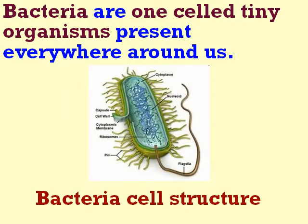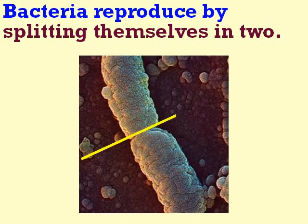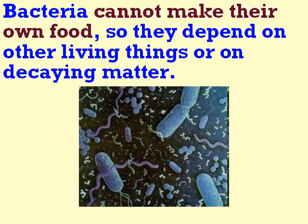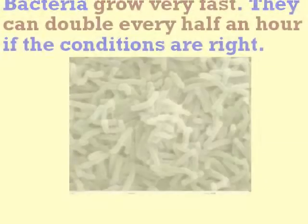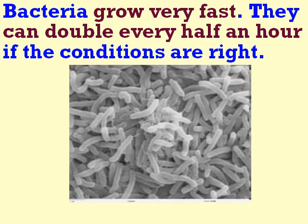Bacteria are one-celled tiny organisms present everywhere around us. Bacteria reproduce by splitting themselves in two. Bacteria cannot make their own food, so they depend on other living things or on decaying matter. Bacteria grow very fast — they can double every half an hour if the conditions are right.